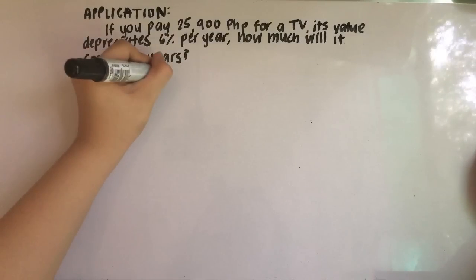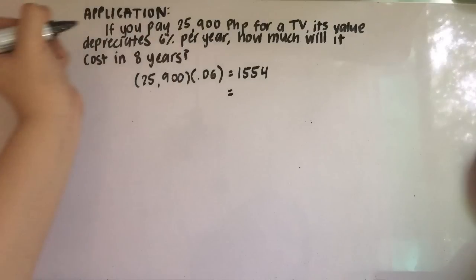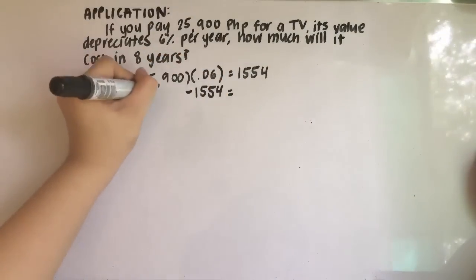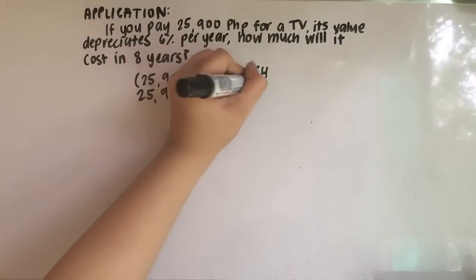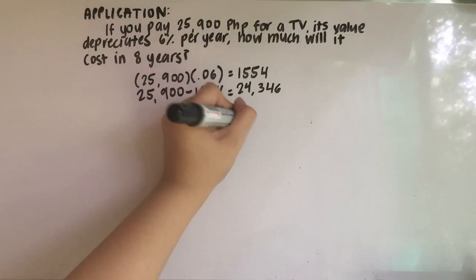We are now going to do an application or word problem. If you pay 25,900 pesos for a TV and its value depreciates by 6% per year, how much will it cost in 8 years? First, we look for 6% of 25,900 pesos by multiplying 25,900 by 0.06, which gives us 1,554. Since the value depreciates by 6% per year, we subtract 1,554 from 25,900, giving us 24,346.